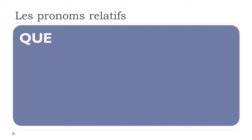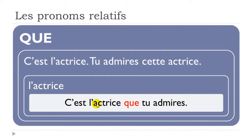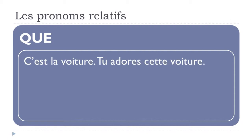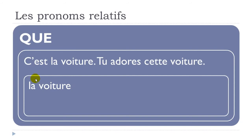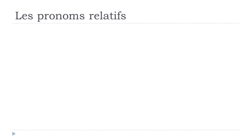Same structure at the feminine: 'c'est l'actrice' and 'tu admires cette actrice' becomes 'c'est l'actrice que tu admires'. With a thing: 'c'est la voiture' and 'tu adores cette voiture' becomes 'c'est la voiture que tu adores'. After 'que', you put the subject then the verb.